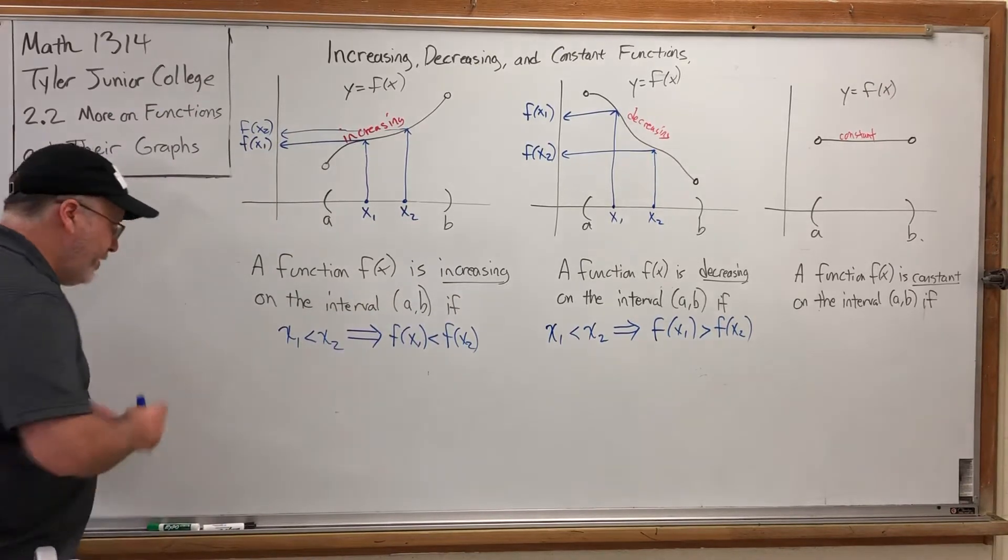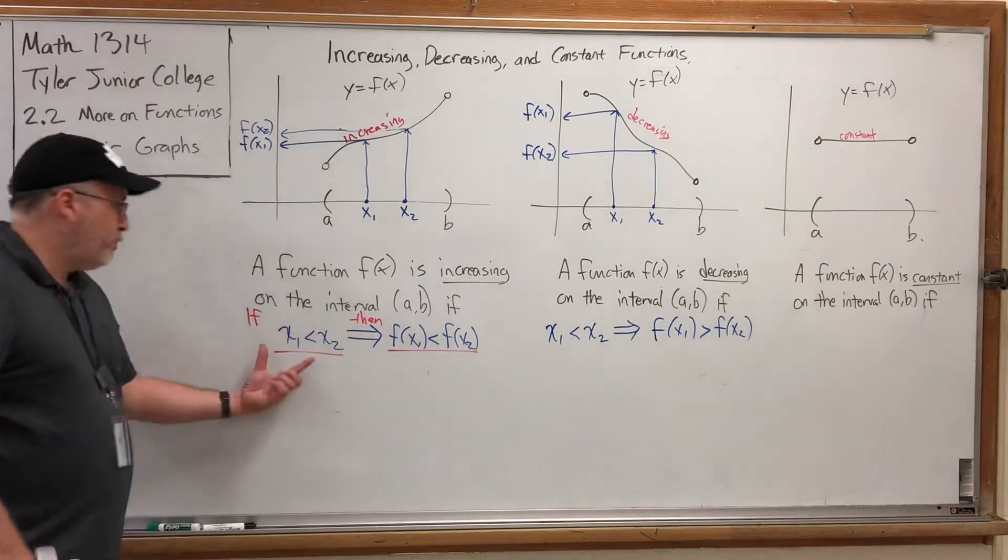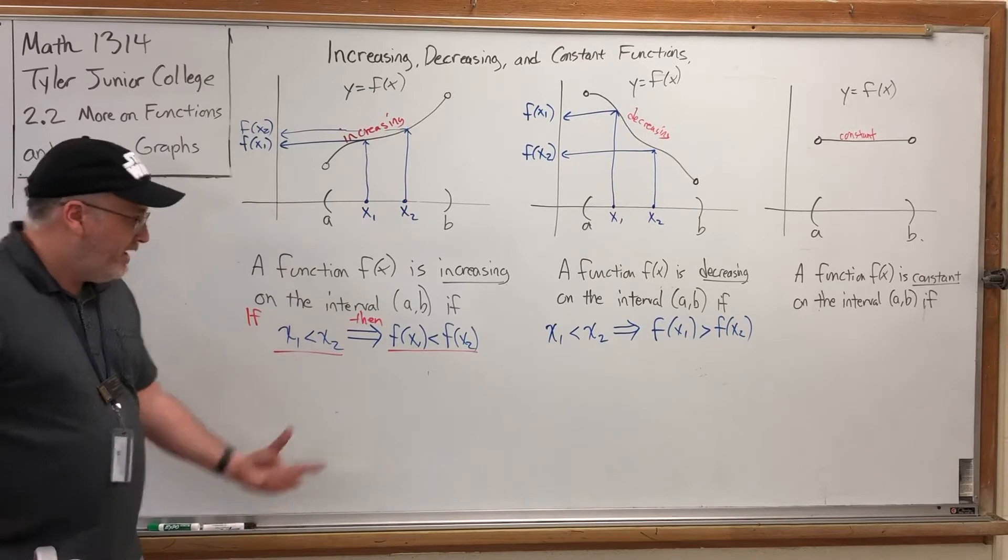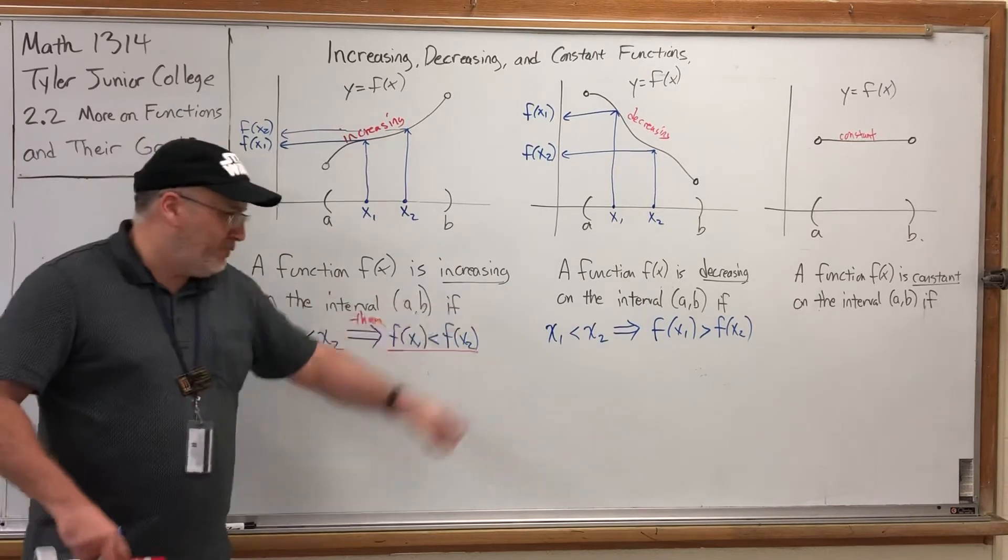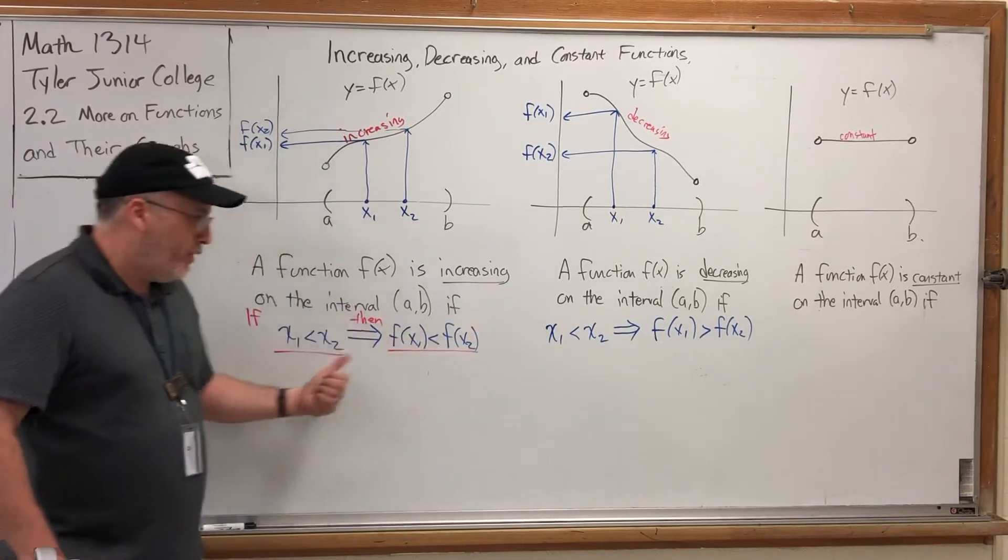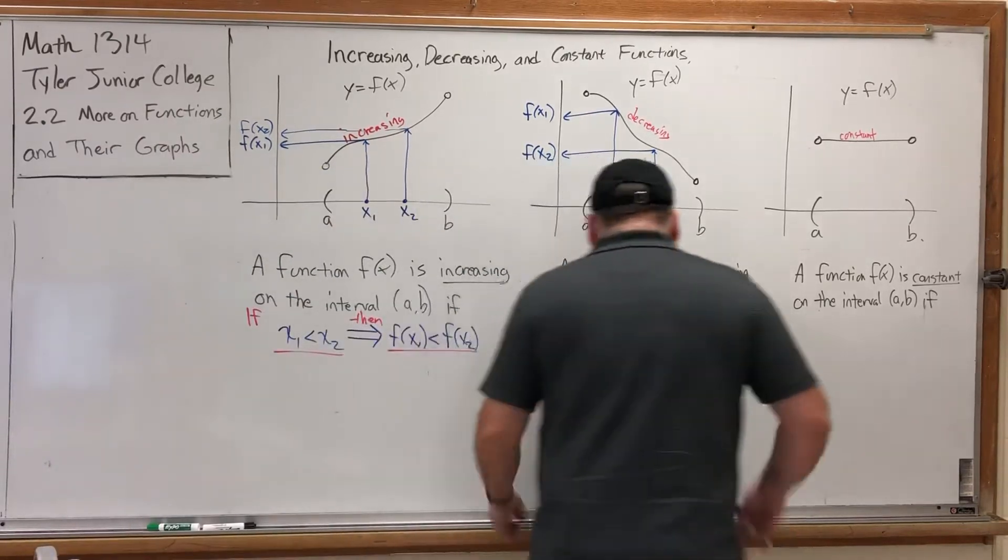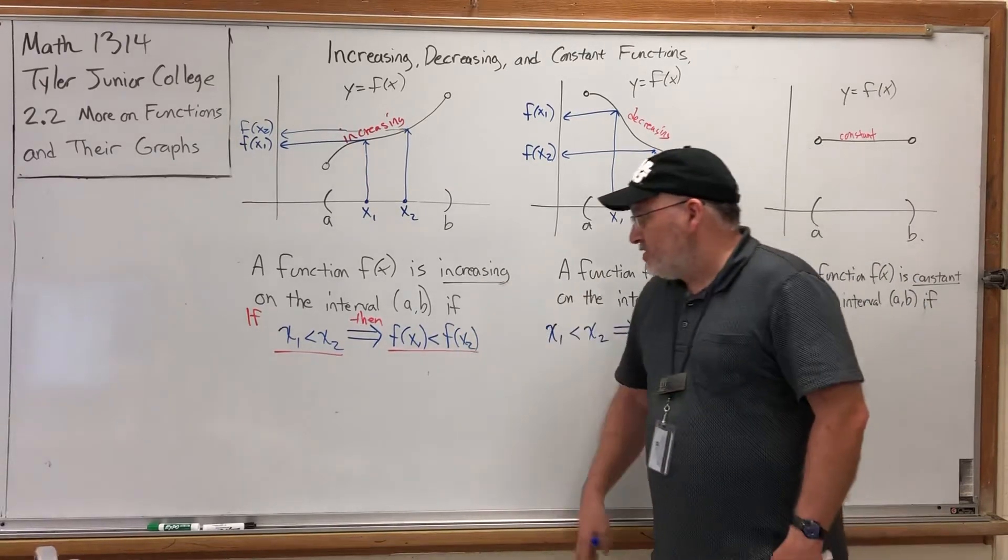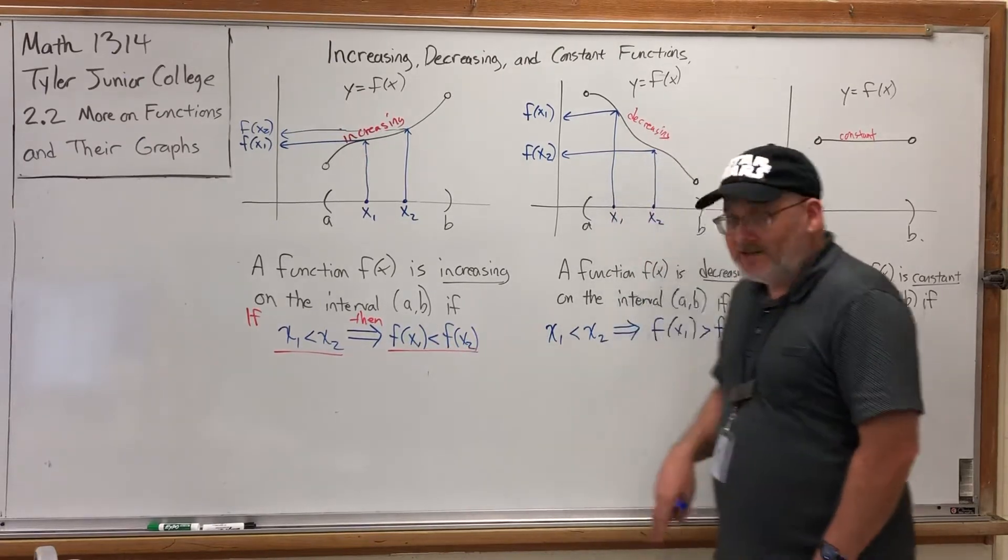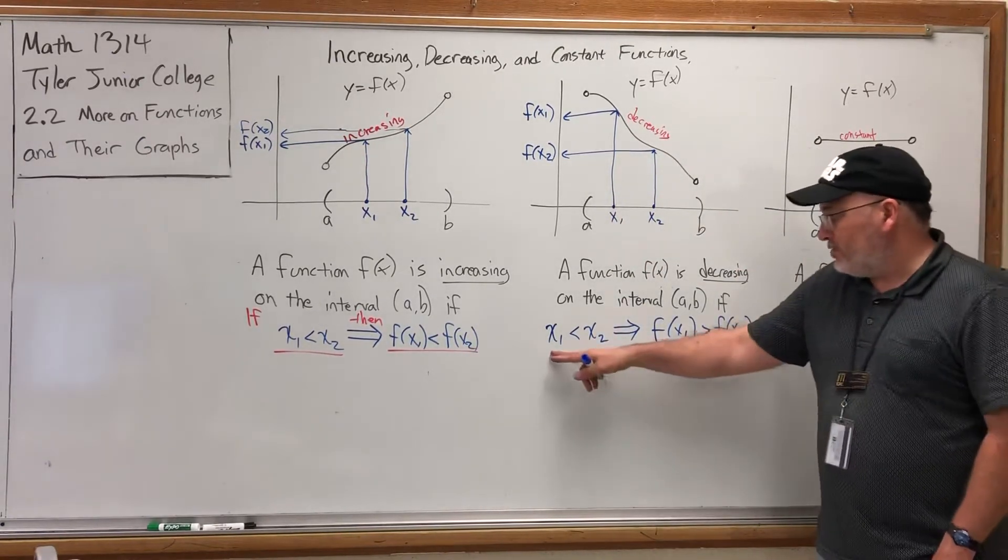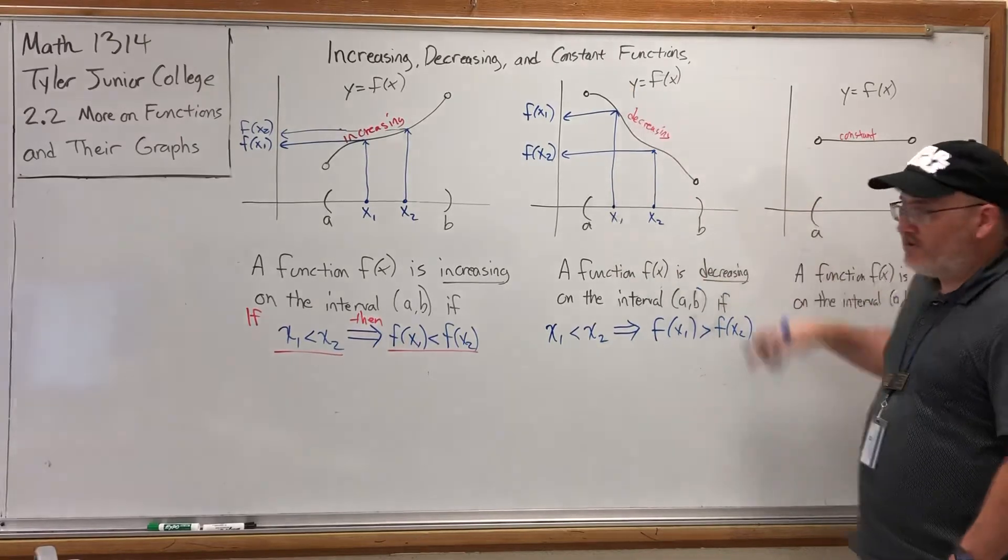It's a symbol for the phrase 'if this happens then that happens.' The first part of an implication is called the antecedent, and the second part, the 'then' part, is called the consequent. So what I was saying is in both of these implications, the antecedent is the same. They're both starting if the first x is less than the second x. But the consequences are different. For increasing, if the first x is less than the second x, then the first y is less than the second y. But if you're decreasing, if the first x is less than the second x, then the first y is greater than the second y. That will force the graph to decrease.